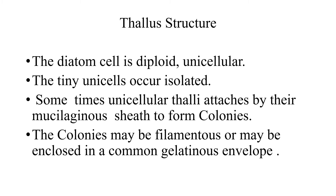Now we talk about thallus structure. The diatom cell is diploid — it is a sporophyte. Unicellular. The tiny unicells occur isolated generally, but sometimes the unicellular thalli get attached because of the mucilaginous sheath to form colonies. The colonies may be filamentous or may be enclosed in a common gelatinous envelope.